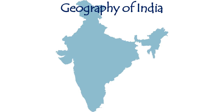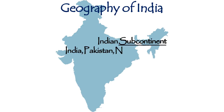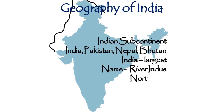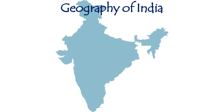India is located in the Indian subcontinent. The Indian subcontinent has four countries: India, Pakistan, Nepal, and Bhutan. Among these four, India is the largest country. The name India is derived from the River Indus, which flows through the northwest of India.